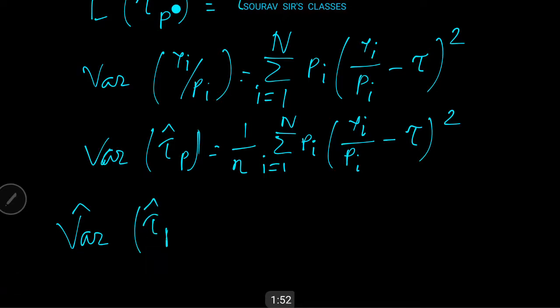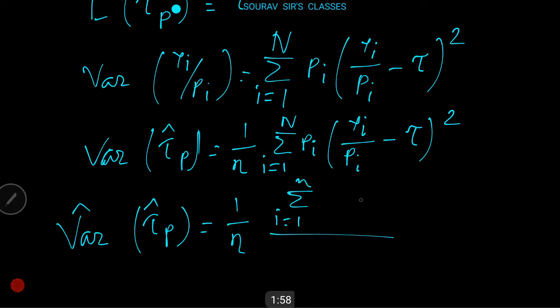An unbiased estimator for Var(τ̂_P) is v̂ar(τ̂_P) = (1/n) × Σ(i=1 to n) (y_i / Π_i − τ̂_P)².